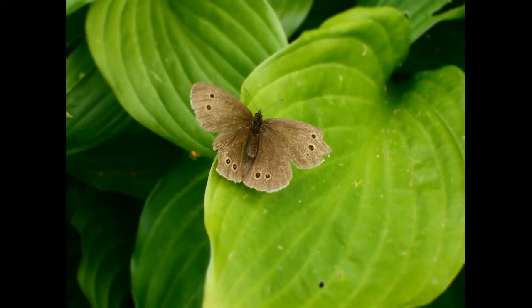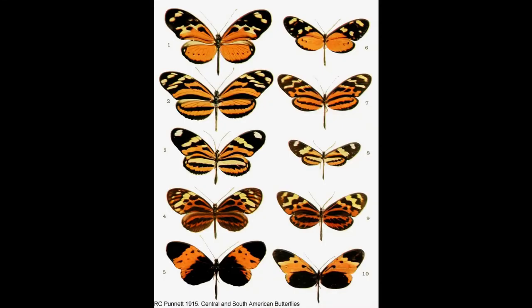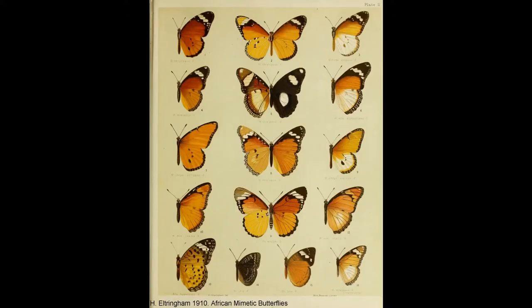Or the reverse can happen, and numbers of spots can reduce. The end point of this is that similar patterns can evolve in different butterflies as a result of similar changes in these common regulators. And the ease with which these similarities can develop gives rise to the great mimicry complexes of the Heliconius butterflies of South America, and also much less well-known but equally dramatic mimicry in African and East Asian butterflies.